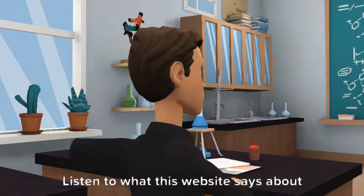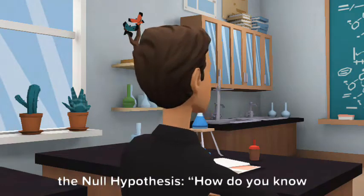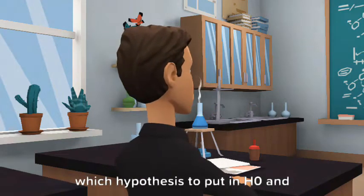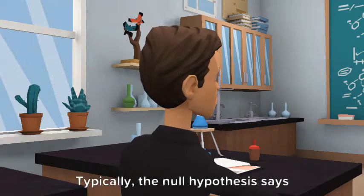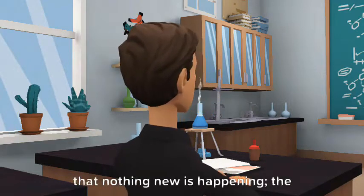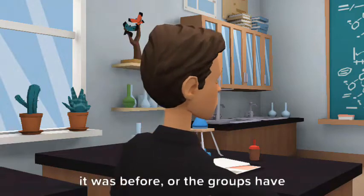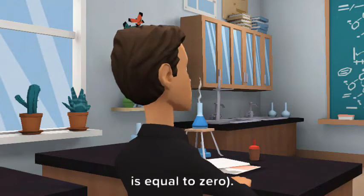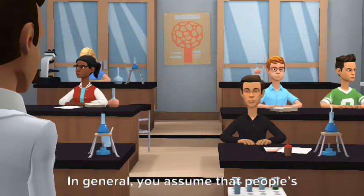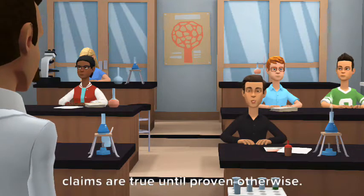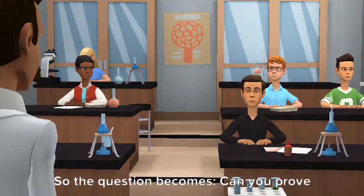Wow. Listen to what this website says about null hypothesis. How do you know which hypotheses to put in H0 and which to put in HA? Typically, the null hypothesis says that nothing new is happening. The previous result is the same now as it was before. Or the groups have the same average. Their difference is equal to zero. In general, you assume that people's claims are true until proven otherwise. So the question becomes, can you prove otherwise?